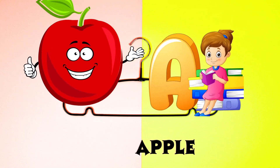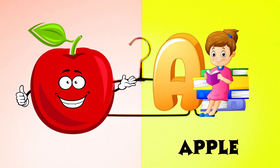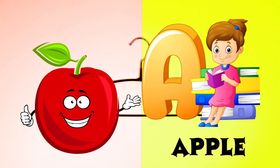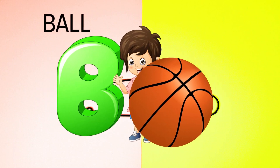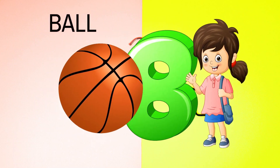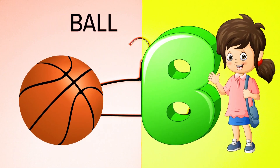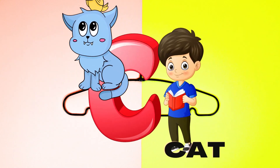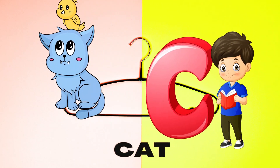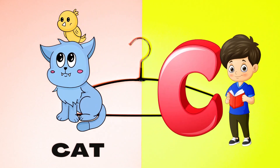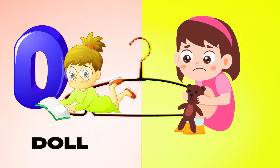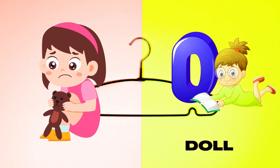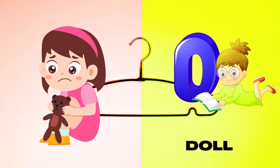A is for Apple, A-A-Apple. B is for Ball, B-B-Ball. C is for Cat, C-C-Cat. D is for Doll, D-D-Doll.